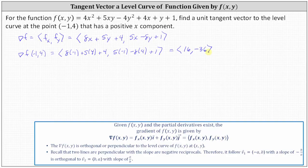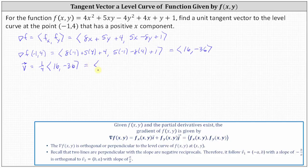This gradient vector is perpendicular or orthogonal to the level curve at negative one comma four, but so is any scalar multiple. Let vector v equal one-fourth times the gradient vector at negative one comma four, with x component 16 and y component negative 36. This gives us the vector 4 comma negative 9, which is orthogonal to the level curve at the point.